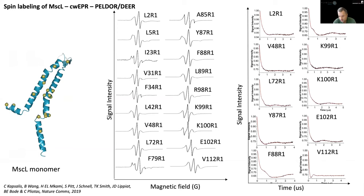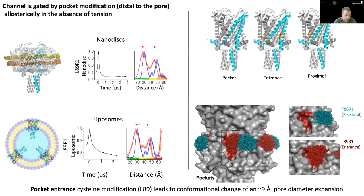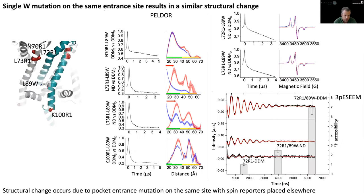We measured labeling efficiency, accessibility, and mobility at all sites, labeling mainly transmembrane but also cytoplasmic residues. We recorded PELDOR time traces showing nice oscillations allowing us to calculate dipolar coupling and derive distance distributions — narrow and well-defined, enabling robust conclusions. To make a long story short: we identified a single site at the entrance of these lipid pockets, and modification there caused a significant conformational change of approximately 9 Å in the pore diameter, verified by electrophysiology consistent with these structural observations.